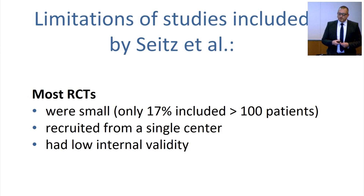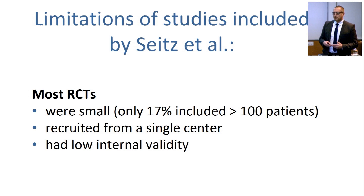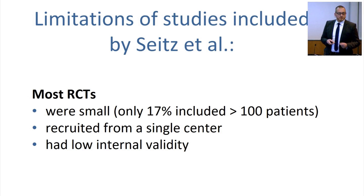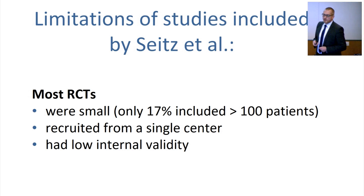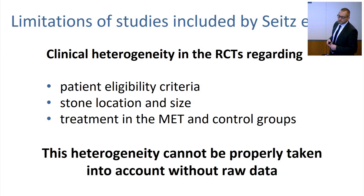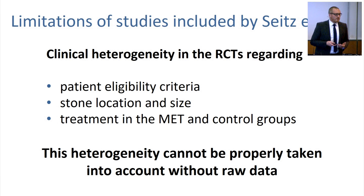In this specific issue, if you check which studies are included in the systematic reviews and look at potential limitations, you realize most RCTs were really small — only a few with more than 100 patients — most were single-centric, most had a low internal validity, and within the RCTs there was a high clinical heterogeneity in terms of patient inclusion, stone location, stone size, and treatment in each distinct group. The ideal would be to get raw data, but we usually do not succeed with this.